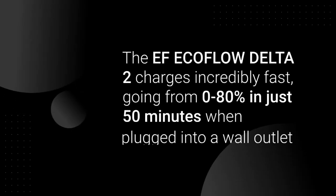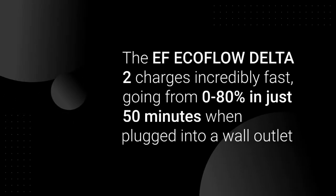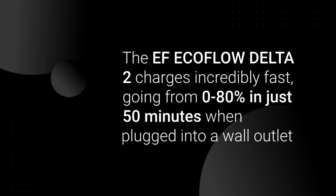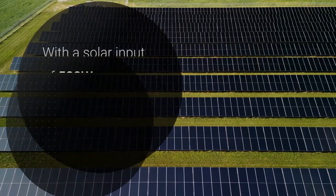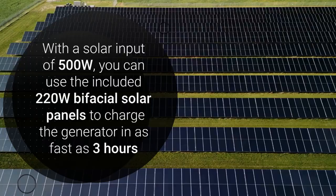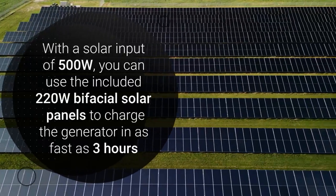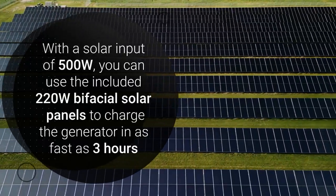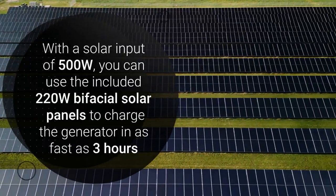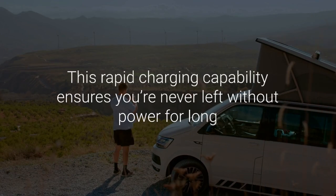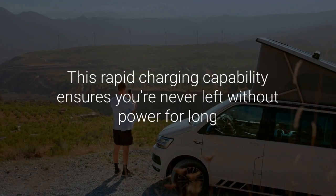The EF EcoFlow Delta II charges incredibly fast, going from 0% to 80% in just 50 minutes when plugged into a wall outlet. Additionally, with a solar input of 500W, you can use the included 220W bifacial solar panels to charge the generator in as fast as 3 hours. This rapid charging capability ensures you're never left without power for long.